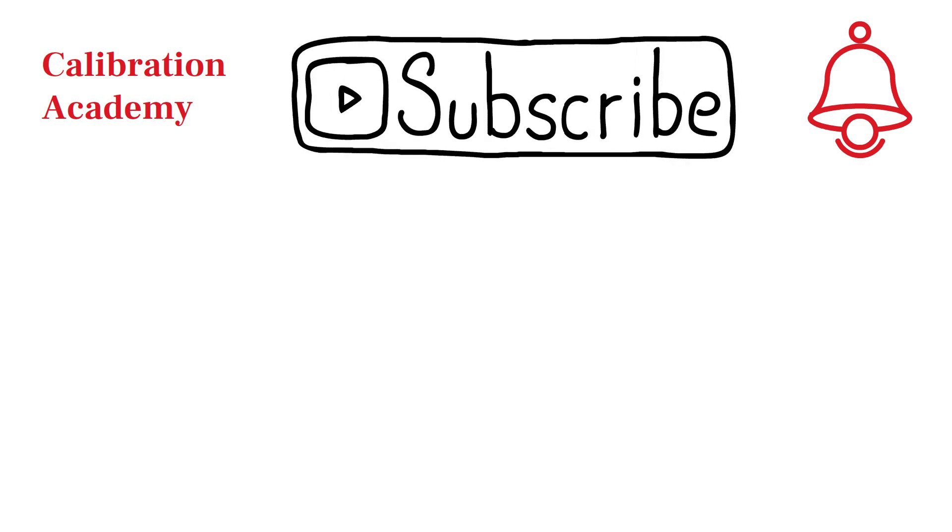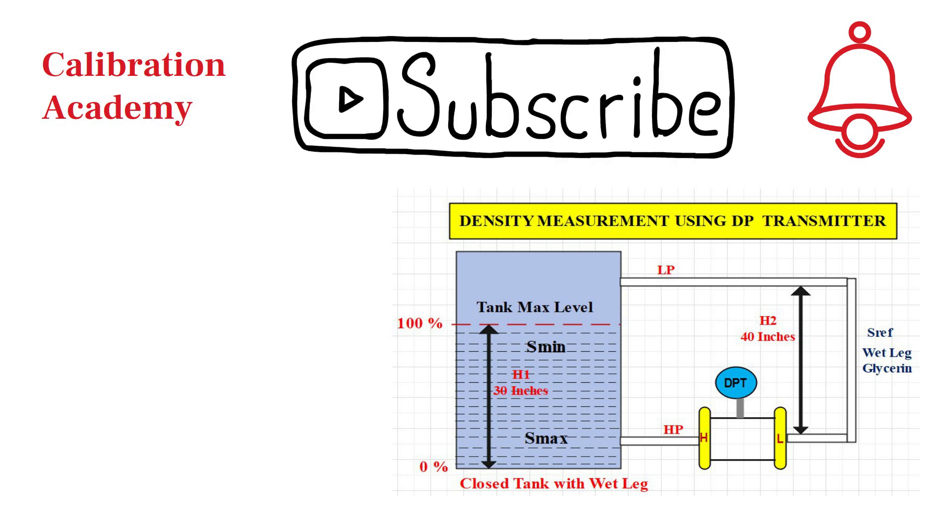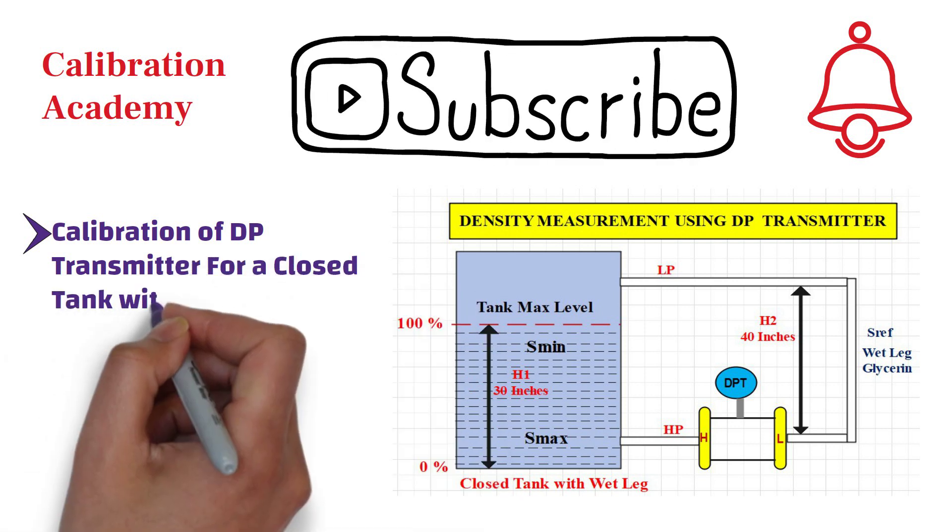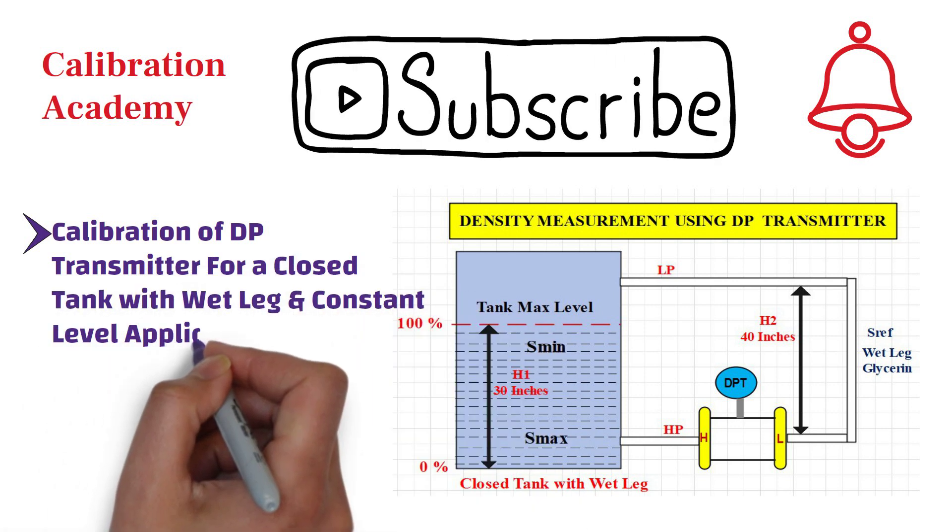If you want a video on a specific topic, please let us know in the comment box. In this video, I will discuss calibration of DP transmitter for a closed tank with wet leg and constant level application for density measurement.